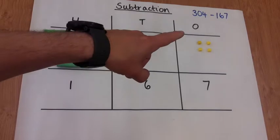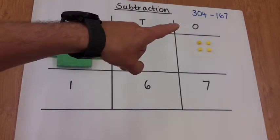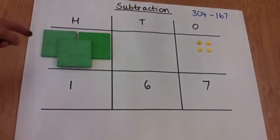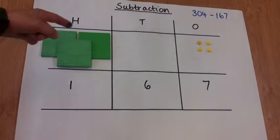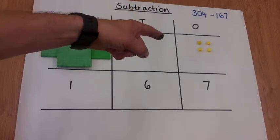For the calculation 304 take away 167, we've laid out the larger number at the top: 300s, no tens, four ones.